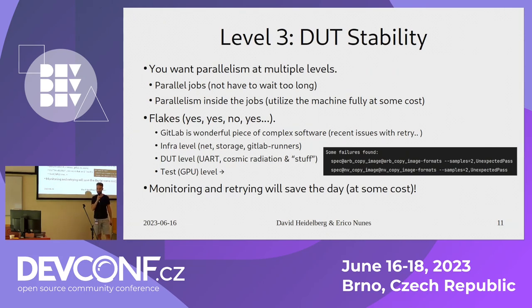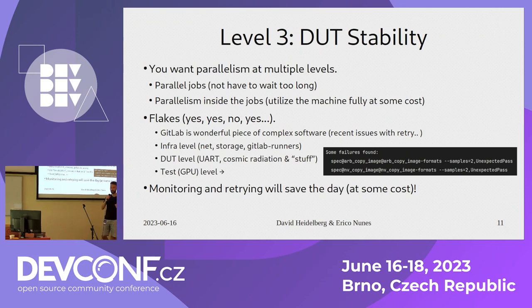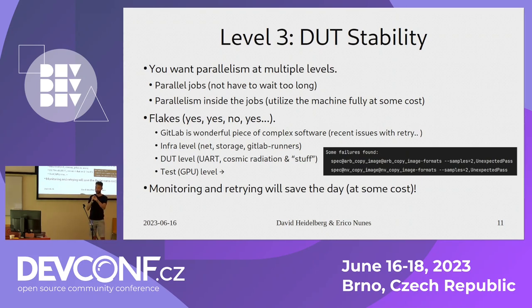The second part is parallelism inside jobs. Because GPU tests usually don't utilize the system 100%, we use parallel runs even inside the runners — for example, we run three threads of tests simultaneously. There is a cost to this, and that's flakes. The tests are usually not meant to be run with that level of parallelism, so sometimes something fails. It's very hard to debug — we know what failed, but it may be just one job conflicting with another once in a thousand runs. That's a hard thing to handle.